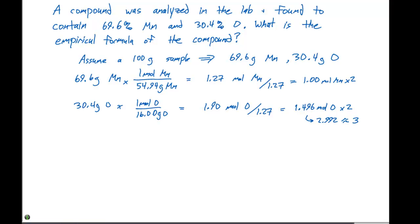For the manganese, we have to do the same thing. When we do that, we're going to get 2.00. Now we have each of these, the ratio, the smallest whole number ratio, and we can write our empirical formula.